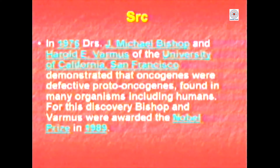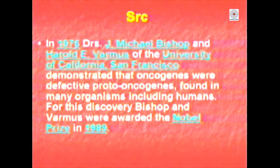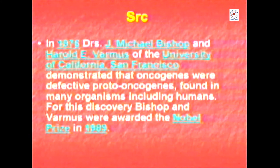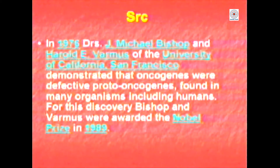In 1976, Michael Bishop and Harold Varmus of the University of California San Francisco demonstrated that oncogenes were nothing else but defective proto-oncogenes — they are part and parcel of a normal cell, and only when they are altered or modified do they become oncogenic. For this discovery, Bishop and Varmus were awarded the Nobel Prize in the year 1989.